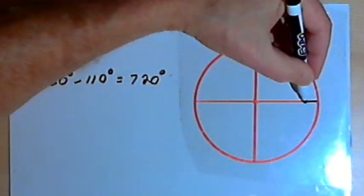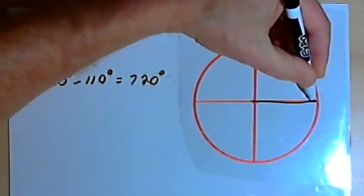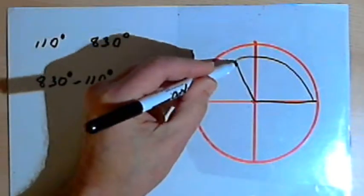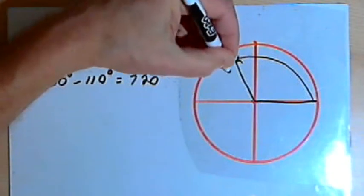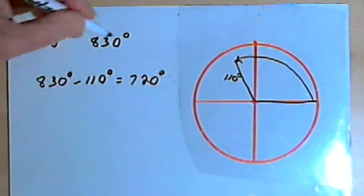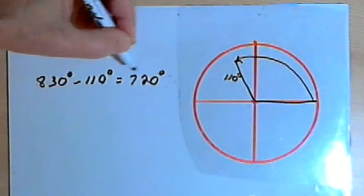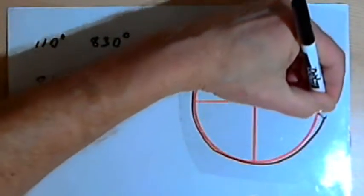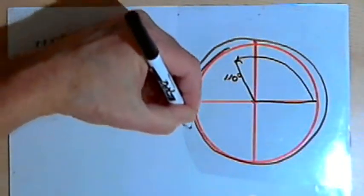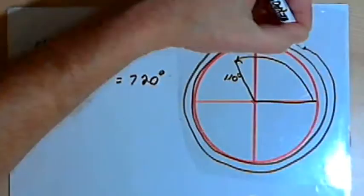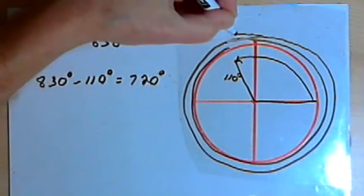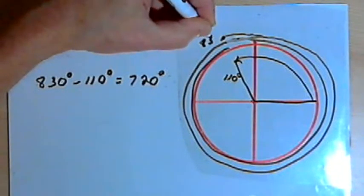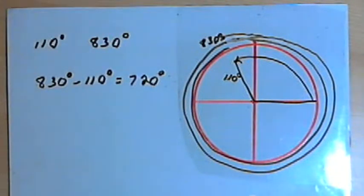To see that visually, I'll start in the standard position and I'll draw an angle, this will terminate in the second quadrant, I'll draw an angle of 110 degrees. And then, since there's a 720 degree difference, I would go around the circle one time, that's 360 degrees, and a second time, that's 720 degrees more, and I would end up in the same place as before at 830 degrees.